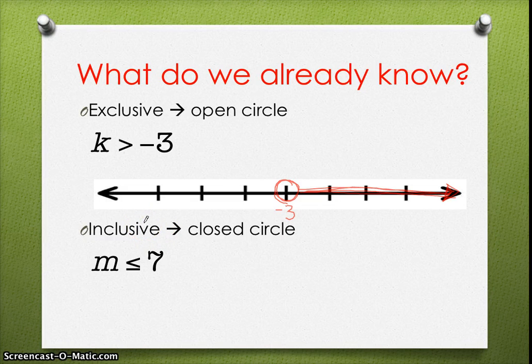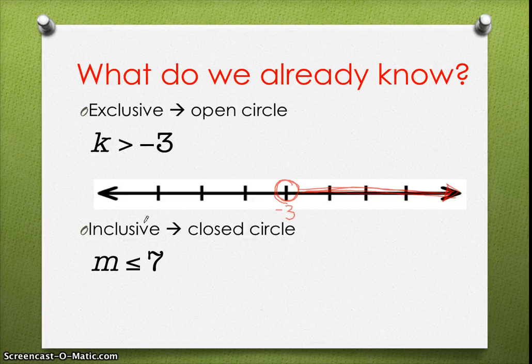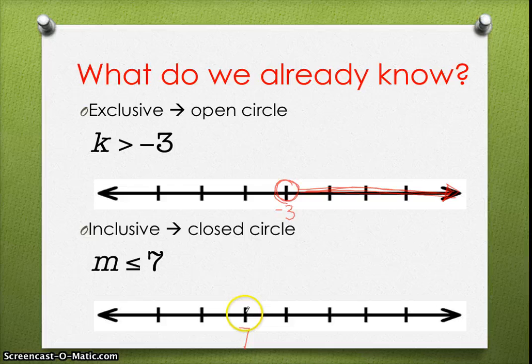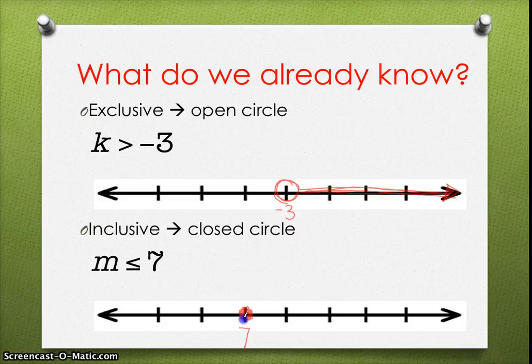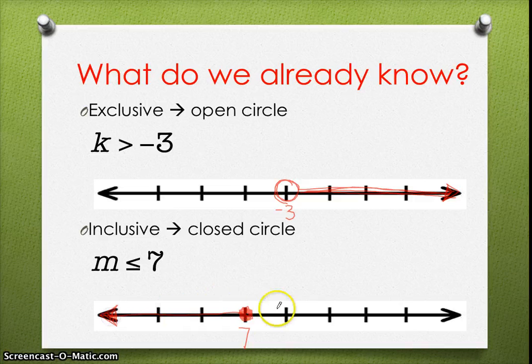In contrast, if we're looking at an inequality that is inclusive, which means that we want to include the equal to value, such as m is less than or equal to 7, then when we are plotting it onto our number line, we want to make sure that we include the 7. So let's go ahead and plot our 7 on the number line. Since we are including this value, we are going to draw a closed circle, or that dot. And since it's less than, we're going to move in the left direction, because the values to the left would be less than the 7.